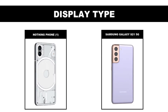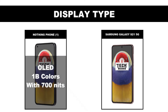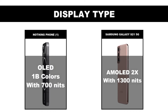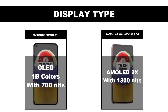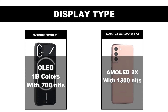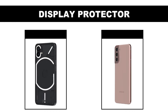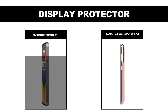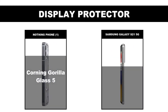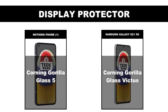Display type: Nothing Phone 1 is OLED with 1 billion colors and 700 nits peak brightness. Samsung Galaxy S21 5G is Dynamic AMOLED 2X with 1300 nits peak. Display protector: Nothing Phone 1 is Corning Gorilla Glass 5, Samsung Galaxy S21 5G is Corning Gorilla Glass Victus.